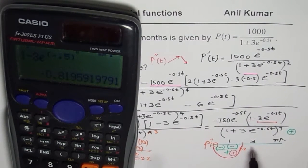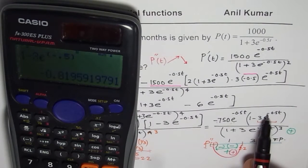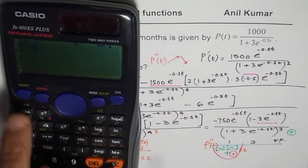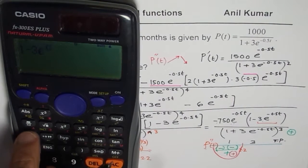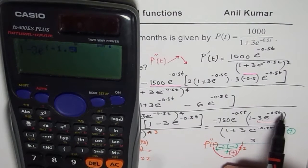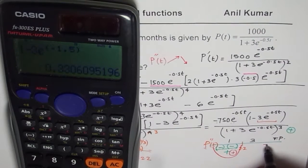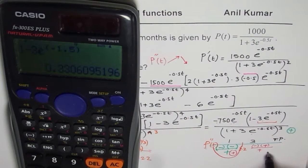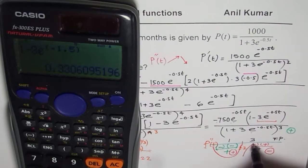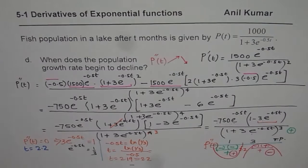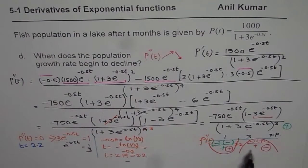Now let us try with test point t equals 3. We compute 1 minus 3 times e to the power of minus 1.5, and this gives a positive value. We know the first factor is negative and divided by a positive denominator, so that results in a negative value. Negative means concave downward. So there is a change in concavity, and the second derivative changes from positive to negative, meaning the population growth rate starts declining at t equals 2.2.